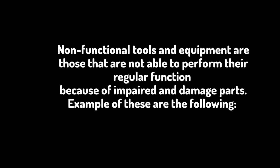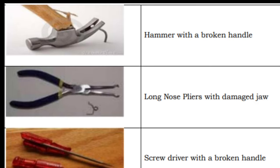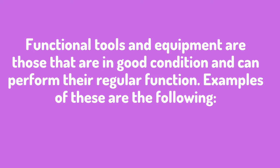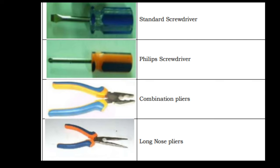Non-functional tools and equipment are those that are not able to perform their regular function because of impaired and damaged parts. Examples include a hammer with a broken handle, long nose pliers with a damaged jaw, a screwdriver with a broken handle, a broken foot rule, and electrical equipment with a damaged cord. Functional tools and equipment are those in good condition and able to perform their regular function. Examples are a standard screwdriver, Phillips screwdriver, combination pliers, and long nose pliers in good condition.